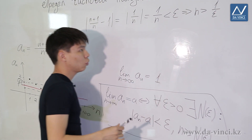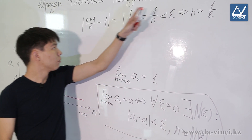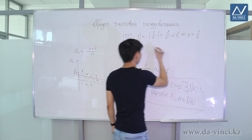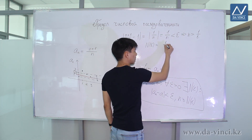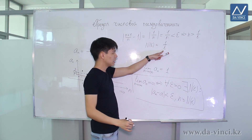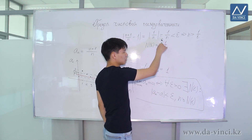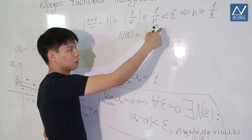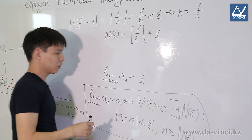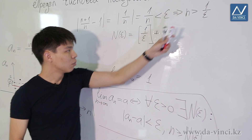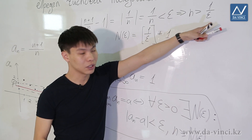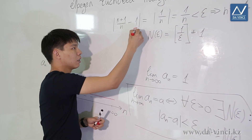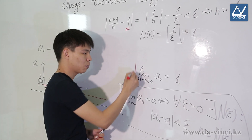As soon as N becomes greater than 1/epsilon, the inequality holds. We take this as N(epsilon). Since N must be a natural number but 1/epsilon can be anything, we take the integer part of this value and add 1 to ensure the inequality works. If N exceeds this value, and this value in turn exceeds 1/epsilon, then the inequality holds — and this means that 1 is really the limit. We conclude that the limit of our sequence is 1.